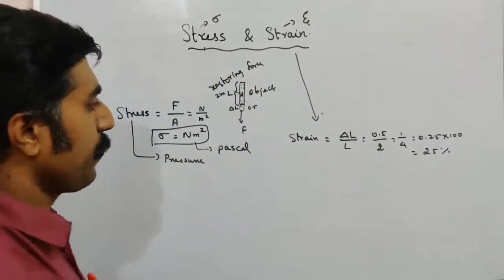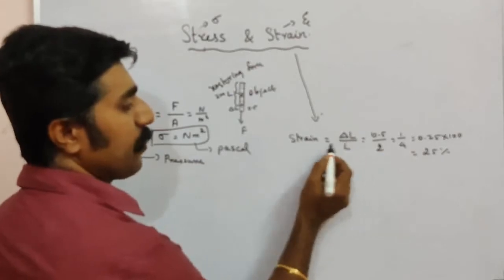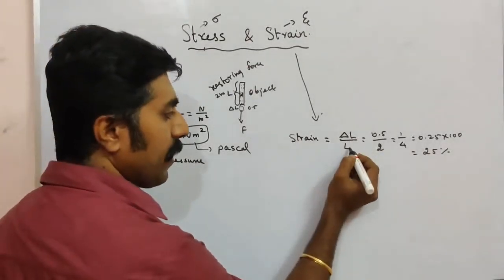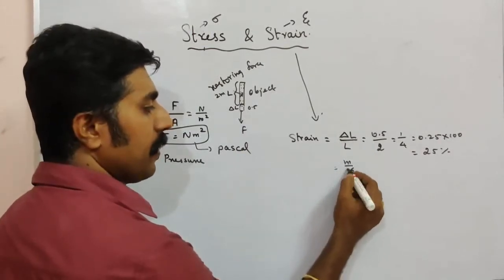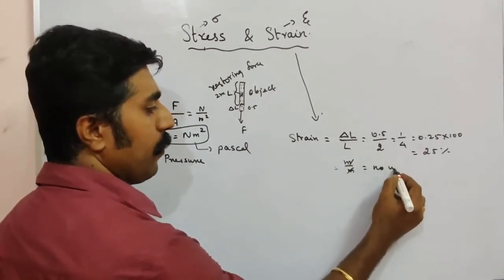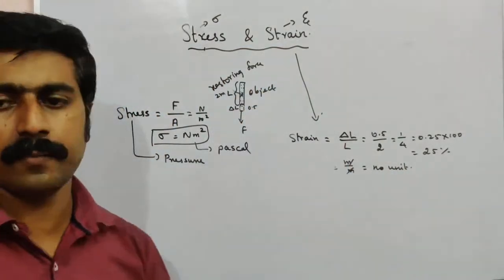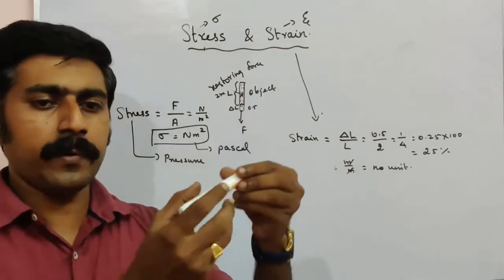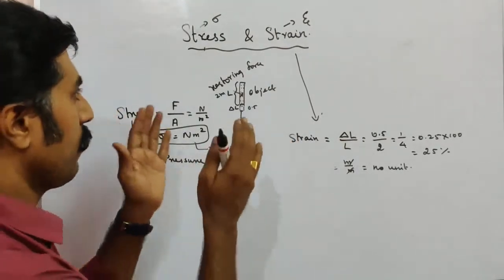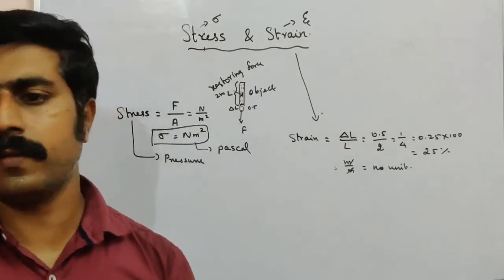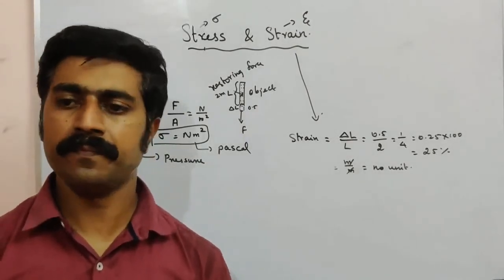Looking at change in length: the units are meter divided by meter, which cancel out — so strain has no unit. Stress and strain are directly proportional. When you apply a deforming force, this relationship is described by Hooke's formula.